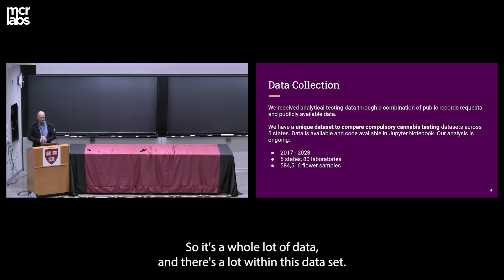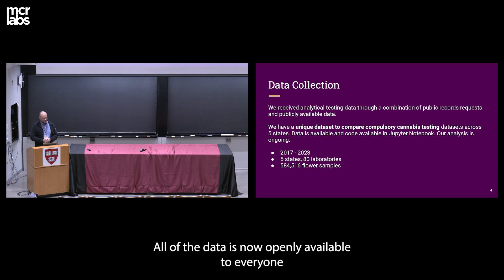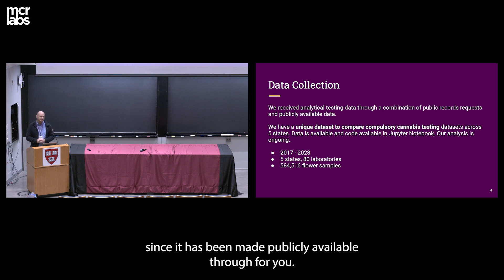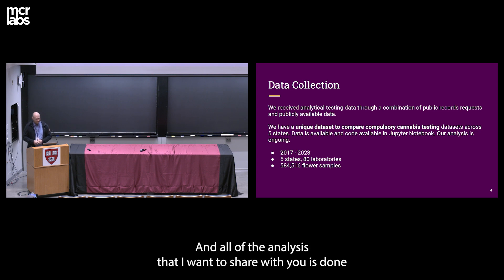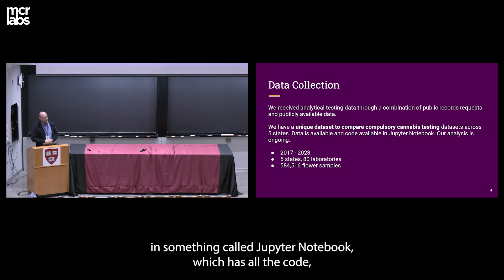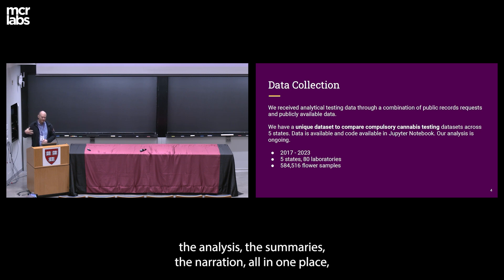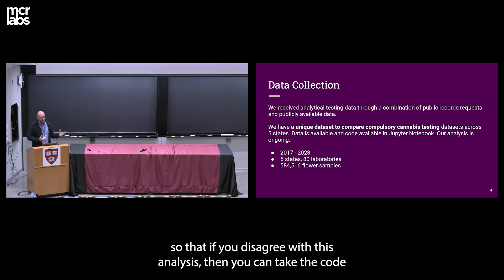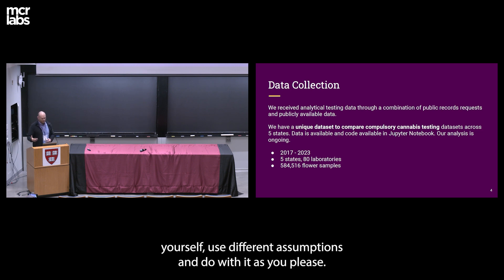We put the data together across five states, 80 labs, over a number of years, with almost 600,000 flower samples. All of the data is now openly available through FOIA, and all of the analysis is done in Jupyter Notebook, which has all the code, analysis, summaries, and narration in one place — so if you disagree, you can take the code, use different assumptions, and deal with it as you please.